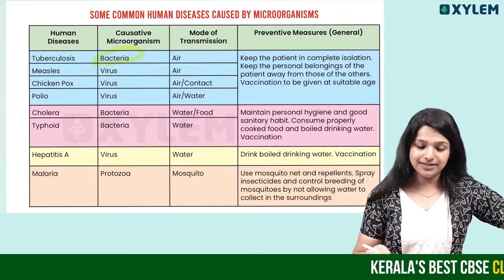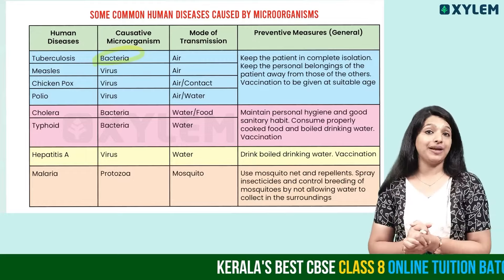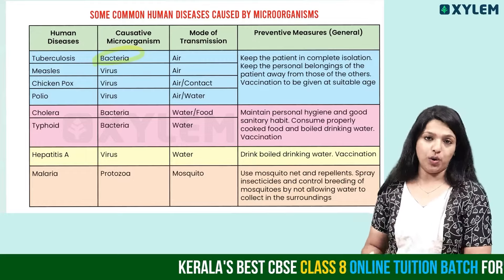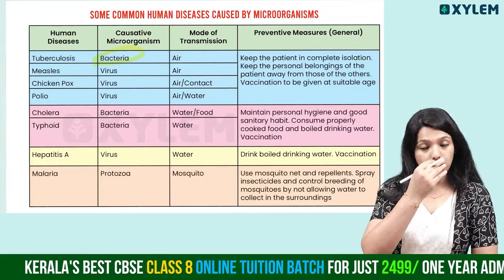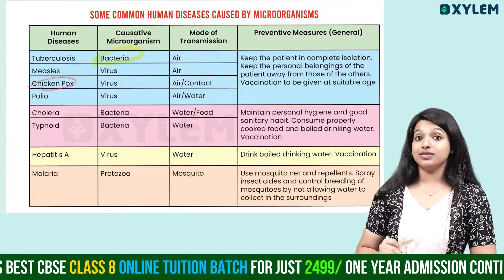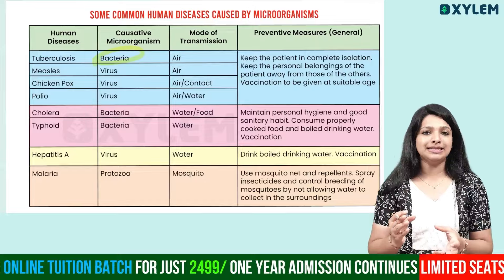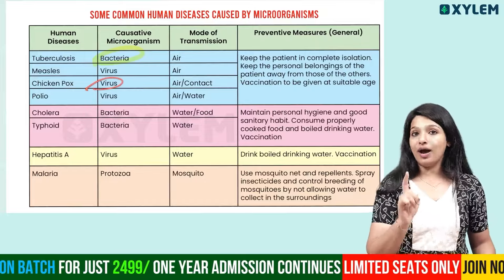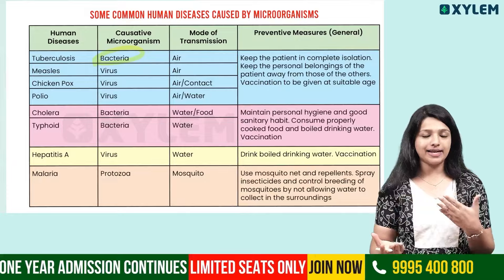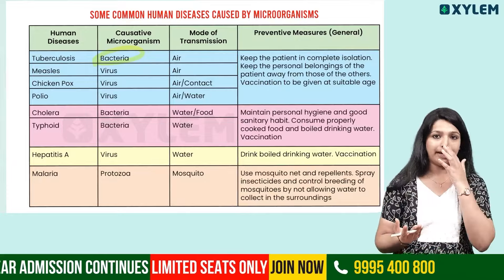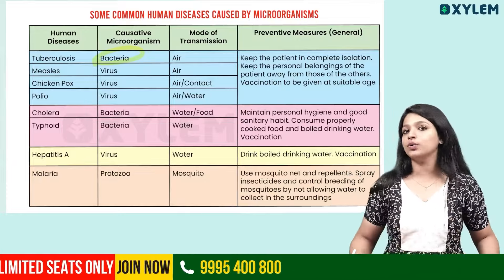Next is Chickenpox. This is a viral infection, which is spread via airborne and contact routes. The causative organism is a virus, and it spreads through air load and contact load.